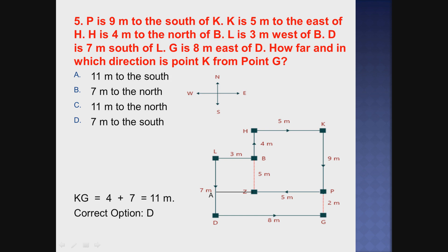Question number 5. P is 9 meters to the south of K. K is 5 meters to the east of H. H is 4 meters to the north of B. L is 3 meters to the west of B. D is 7 meters south of L. G is 8 meters east of D. How far and in which direction is point K from point G?